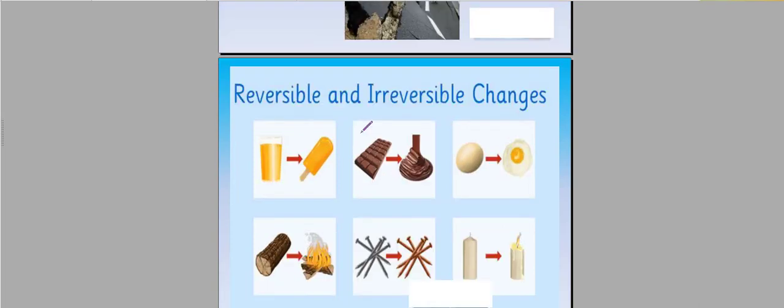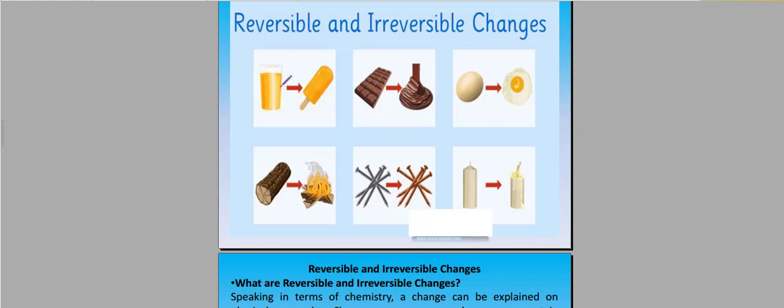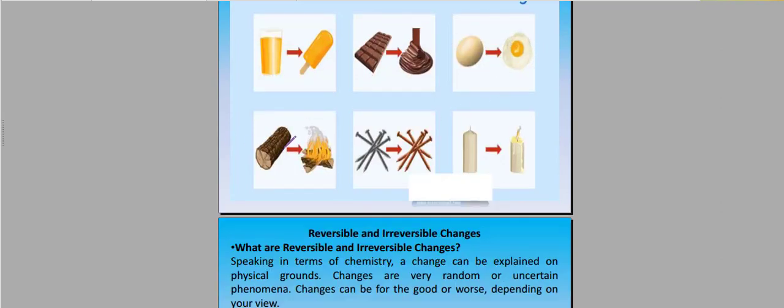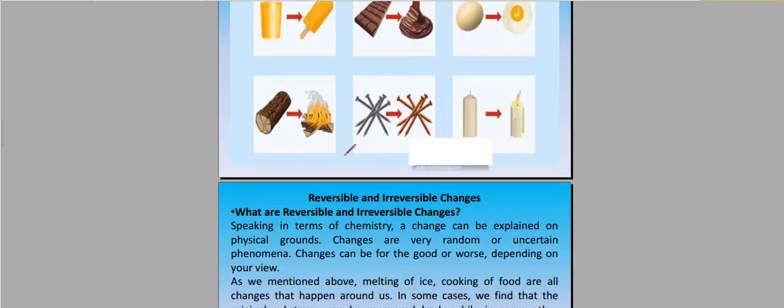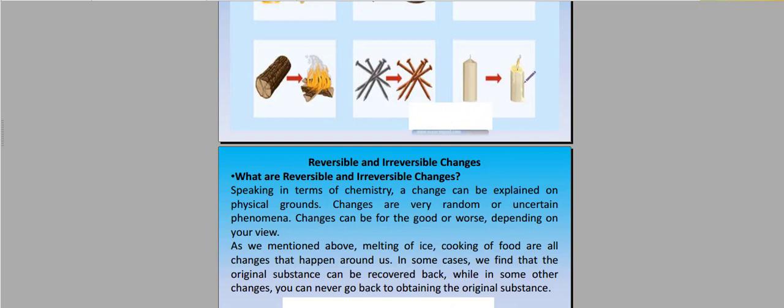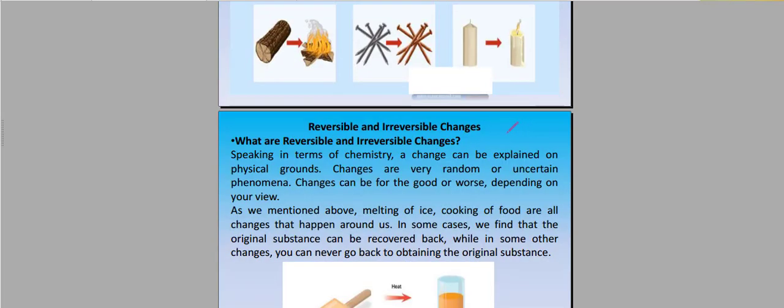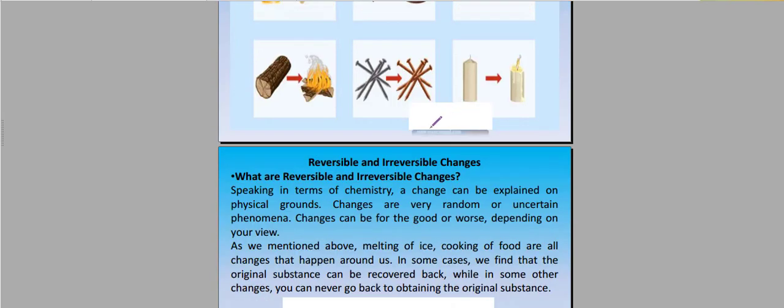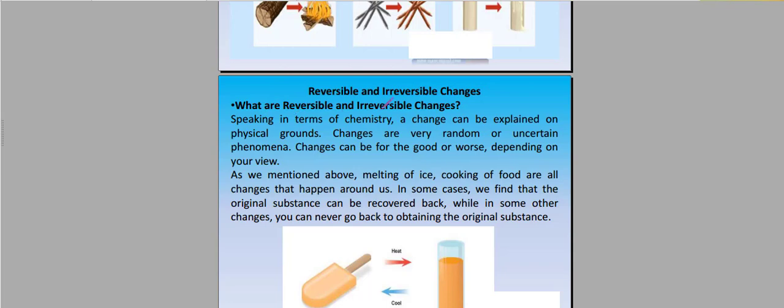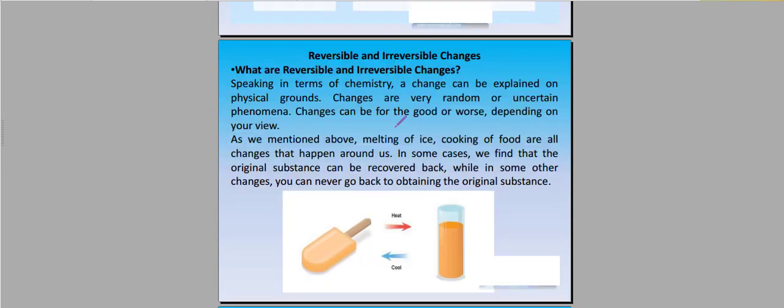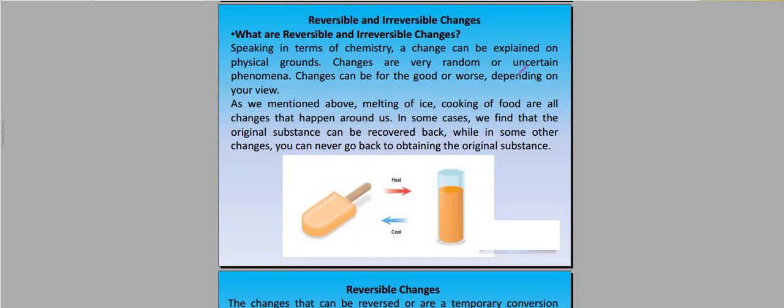Now we have to see our reversible and irreversible changes. We can change juice from liquid form into ice cream form. We can melt chocolate, boil and fry an egg, burn wood, rust metal. A candle will melt into liquid form. These are some examples of reversible and irreversible changes. Speaking in terms of chemistry, a change can be explained on physical or chemical grounds. Changes are very random and uncertain phenomena. Changes can be for good or worse depending on the views.